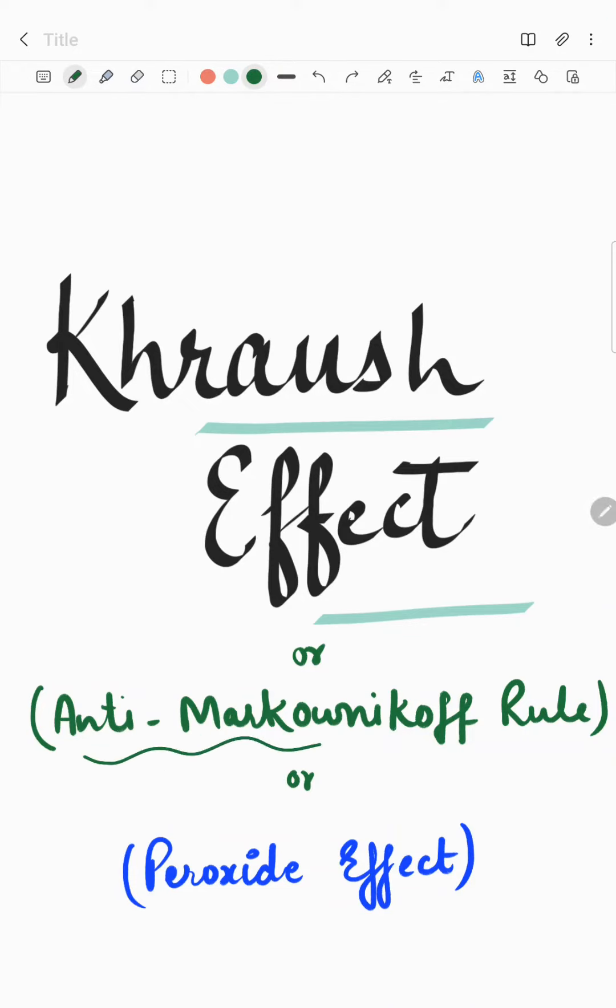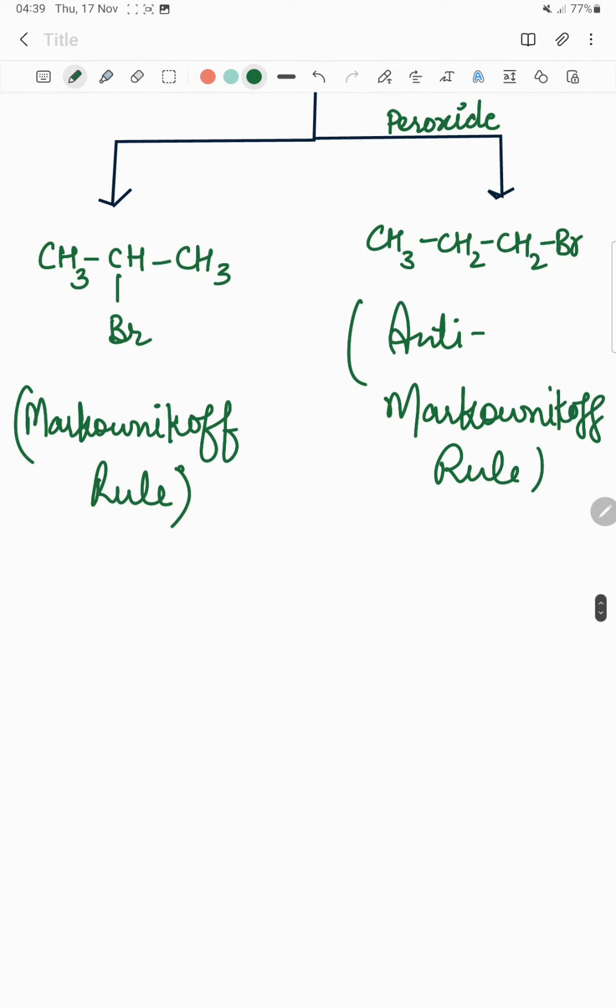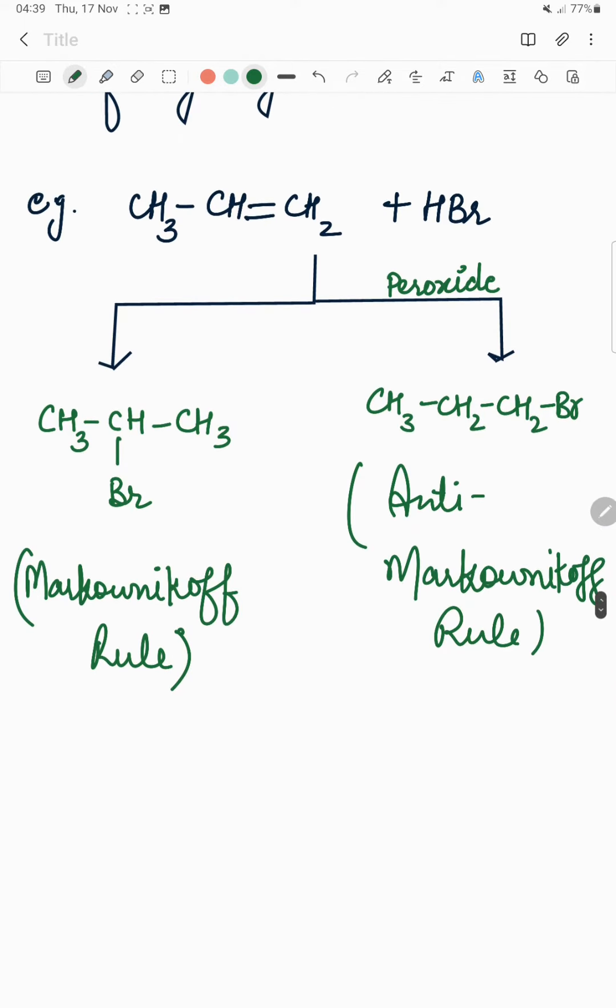Let's discuss anti-Markovnikoff rule, peroxide effect, or Kharasch effect. We will discuss the explanation practically. Let's take an example. This is an alkyne, an unsymmetrical alkyne, and HBr is added.